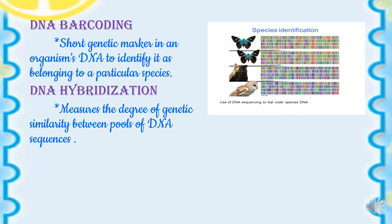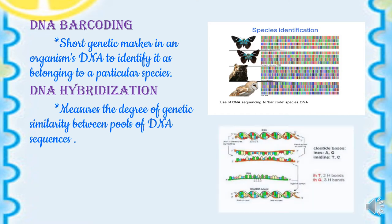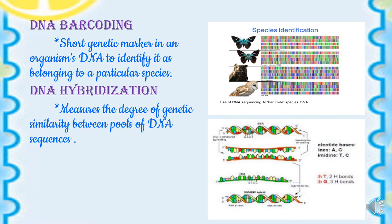DNA hybridization involves the formation of hybrid DNAs in order to measure the degree of genetic similarities from a group of DNA sequences. It is a method of making hybrid DNAs to measure the degree of genetic similarities among different DNA sequences.